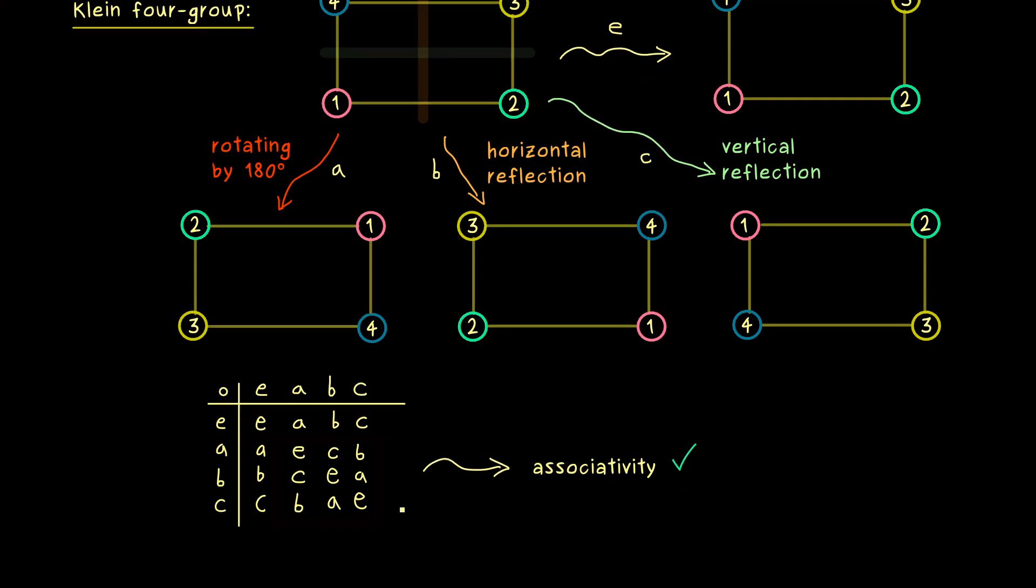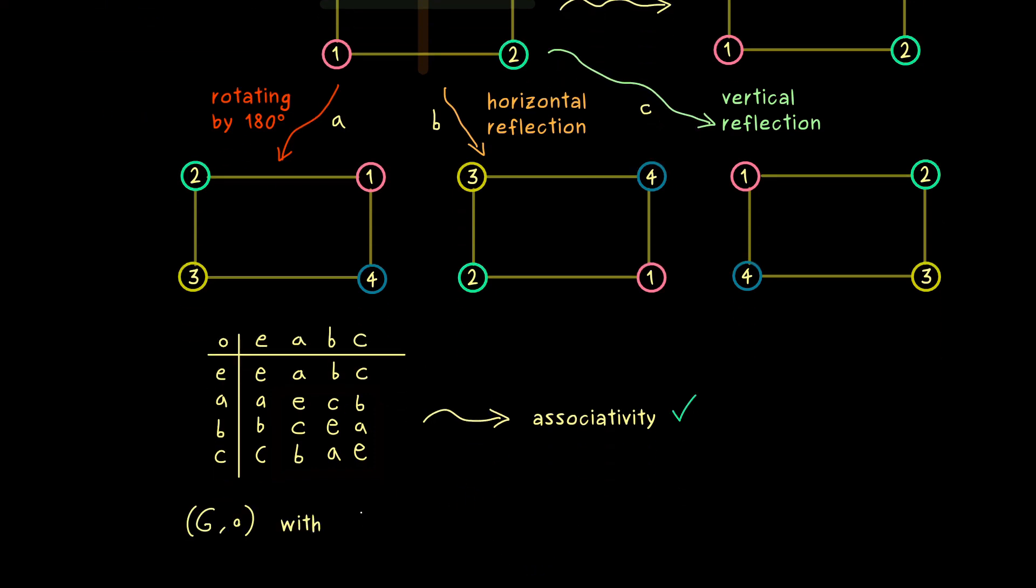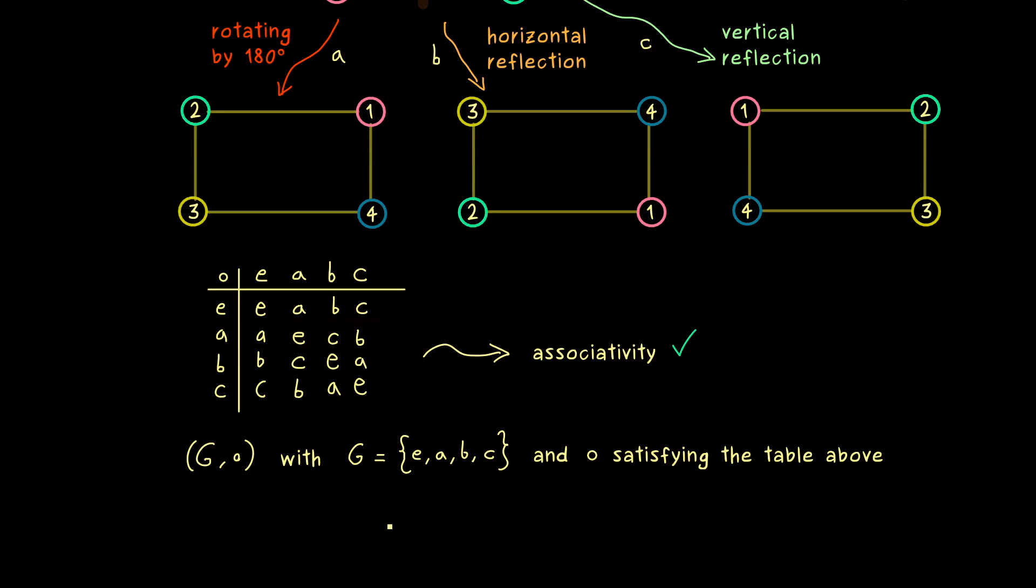So let's write this down as a short definition. We have the set G with four elements and the binary operation given by the table. These two things together give us an abelian group called the Klein four-group. So it is of order four and each element in it is its own inverse.